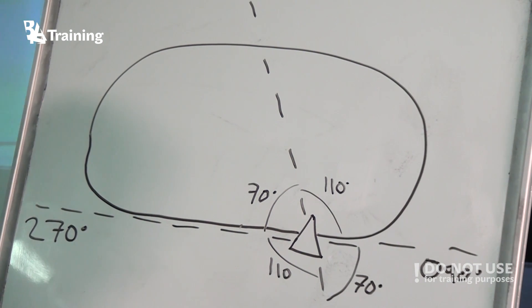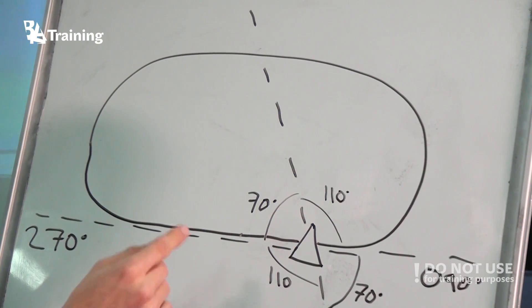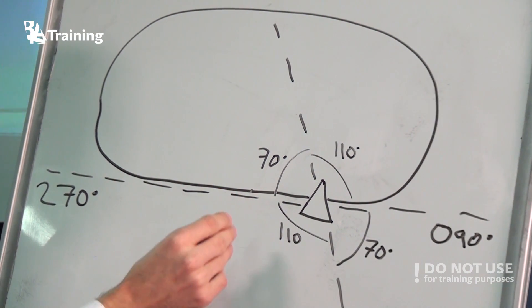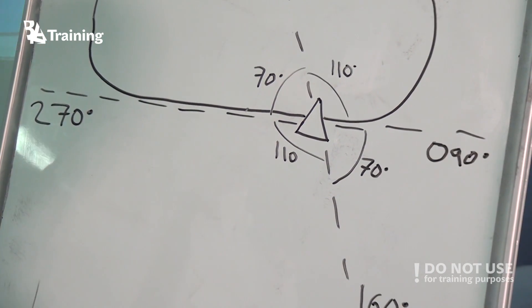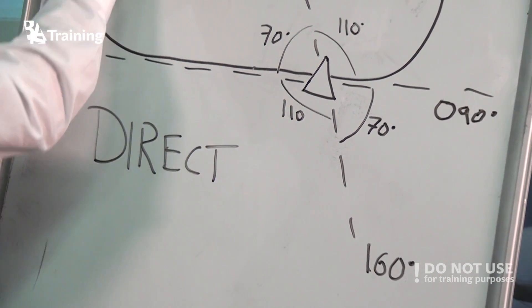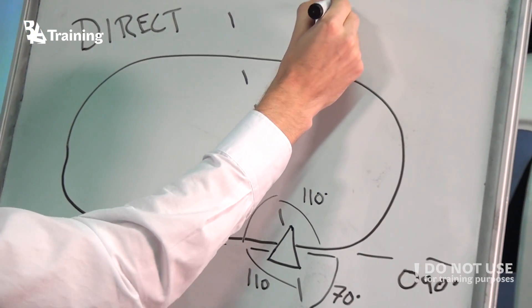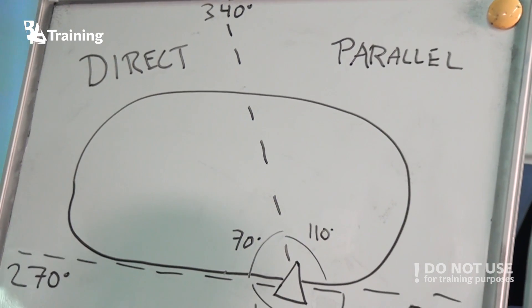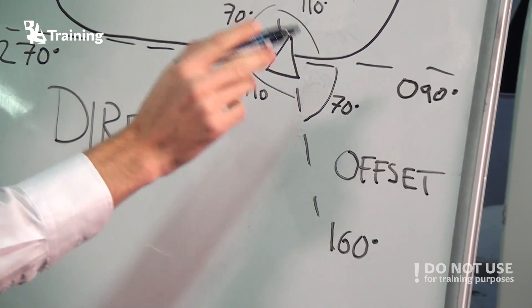So now we have to figure out where we are. So for example, if you have a heading of 010, then you know that you have the fix in front of you, then you are on radial 190 from the fix. So we are somewhere here. And then we know that we can use direct entry. So this sector is direct. This one direct as well. This sector will be parallel. And this sector will be offset.